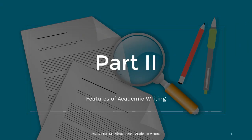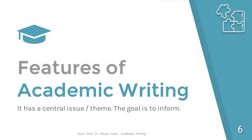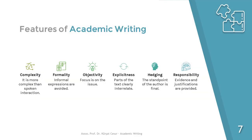What about the features of academic writing? Academic writing has a central matter or theme, every part of which contributes to the main argument. The objective in academic writing is just to inform. The first feature is complexity — written language is usually more complex than spoken language.